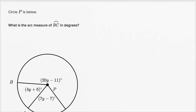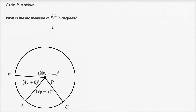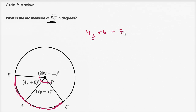Let's do one more. Circle P is below. What is the arc measure of BC in degrees? Since they gave us two letters, we assume it's the minor arc. The arc measure equals the central angle intercepting that arc. That central angle is the sum of two angles: 4y plus 6 and 7y minus 7. Combining: 4y plus 7y is 11y, and 6 minus 7 is negative 1, giving us 11y minus 1.